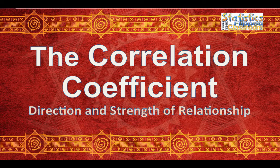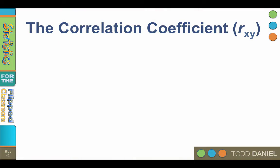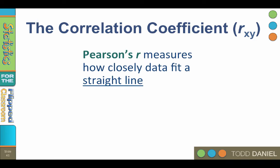We use correlation to describe the strength and direction of the relationship between variables. Although we call it correlation, the full name for the technique we are going to use is Pearson's product-moment correlational coefficient for linear correlation. We will call it Pearson's r for short. The correlational coefficient, r sub xy, for the relationship between x and y, measures how closely the data fit the model of a straight line on a scatterplot diagram.